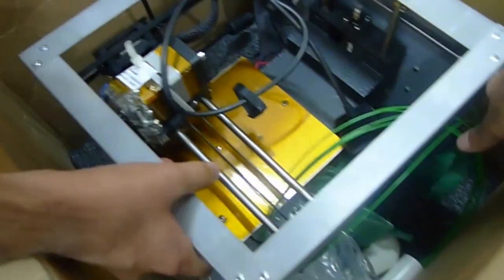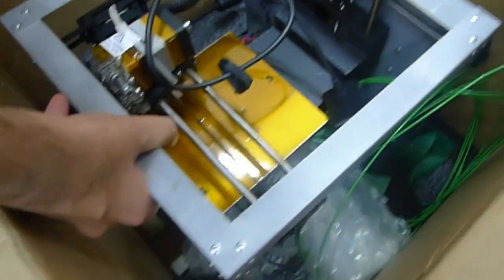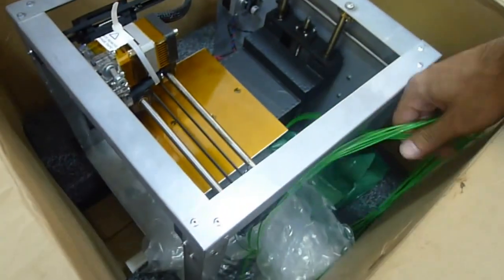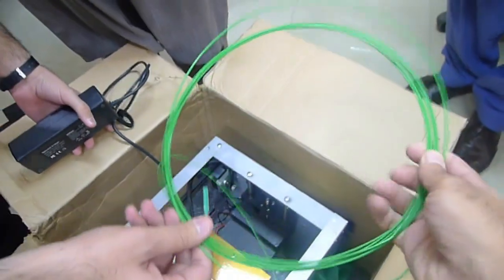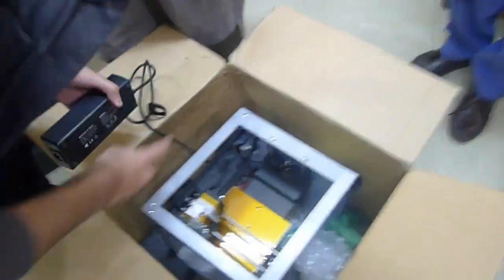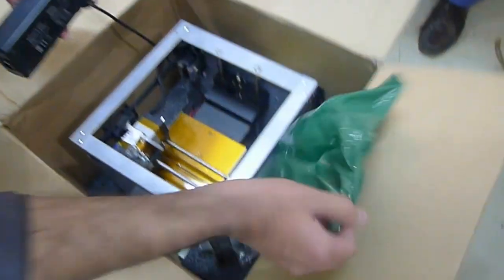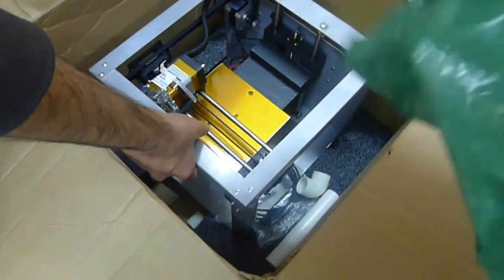So I guess this is the free filament that they've sent with the printer, green in color. Wait, this is the power supply. Lime green filament, some spare packaging material. Yes, this is supposed to have the...